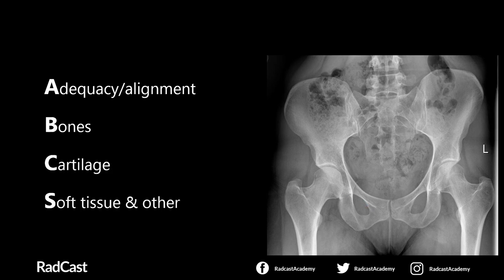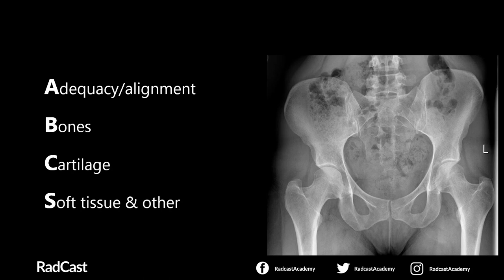Cartilage: assess the three cartilaginous joints — the acetabular joints on each side, the sacroiliac joints on each side, and the pubic symphysis. Main pathologies to pick up are arthritis — remembered with the mnemonic CONS for cysts, osteophytes, narrowed joint space, and subchondral sclerosis — and dislocations. Soft tissue and other: look for soft tissue swelling, calcifications, and any foreign bodies.